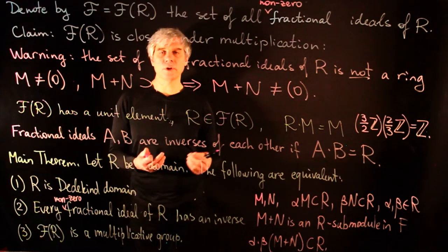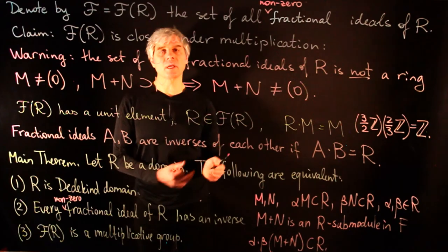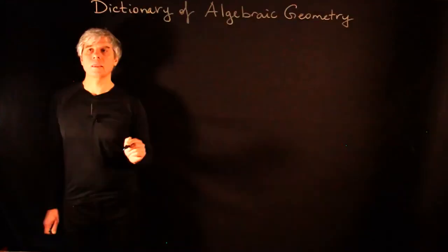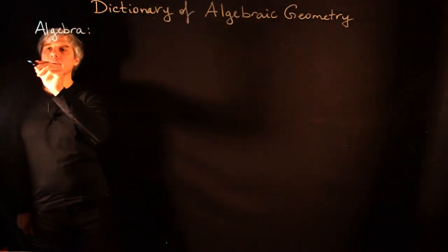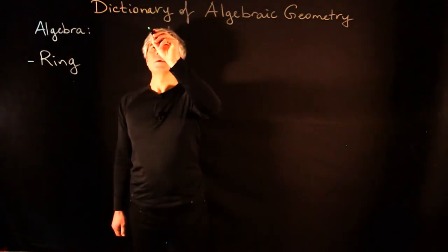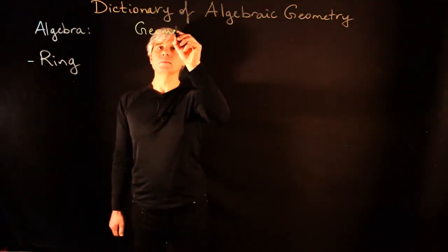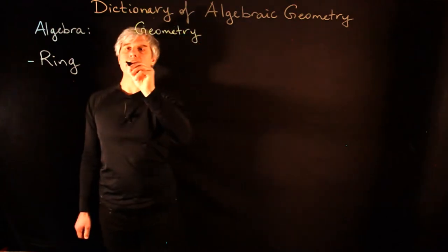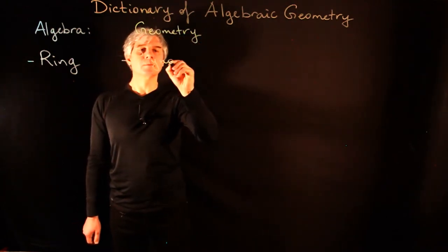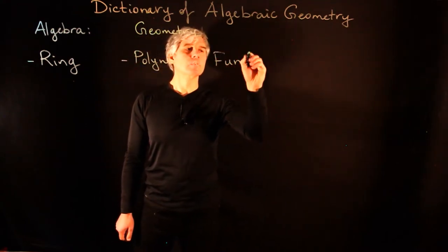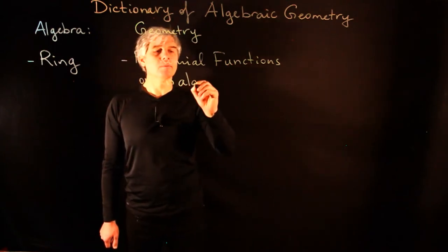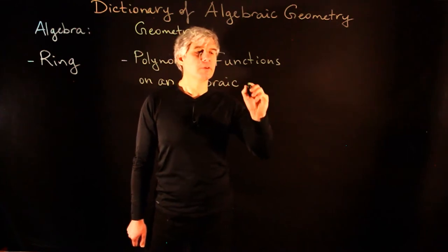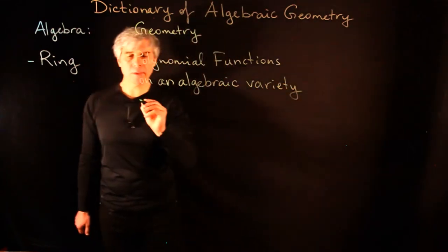For this reason, it is useful to use geometric intuition when working with Dedekind domains. Let us present the dictionary of algebraic geometry. On the algebraic side we have the concept of a ring; on the geometry side this corresponds to polynomial functions on an algebraic variety, and to make things simpler, let us take this over an algebraically closed field.